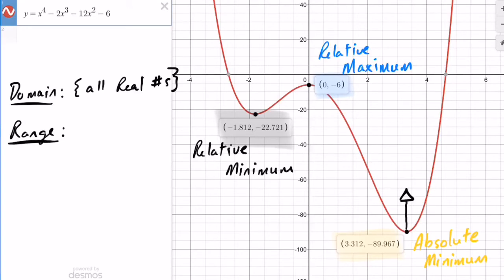It's just going up forever, which means we have a minimum. That's what an absolute minimum does - it gives us our range, it changes. Our range starts at negative 89.967 and then goes up forever.